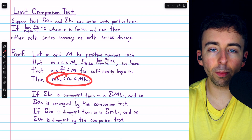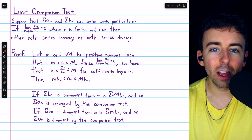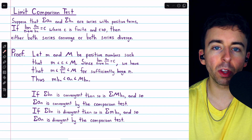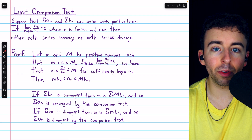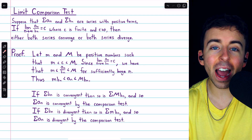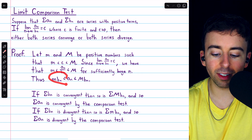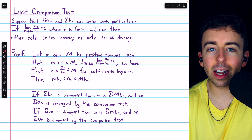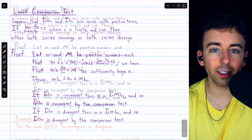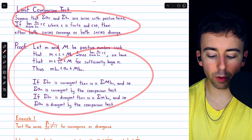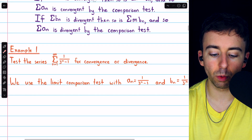Remember that this inequality supporting the proof is only true for sufficiently large n. But, for example, if n had to be greater than 100, this inequality would be true for all values of n greater than 100. So it would only be a finite number of terms, from 1 to 100, for which this inequality might not be true. And a finite number of terms is never going to change the behavior of a series. So we've seen the limit comparison test and its proof.